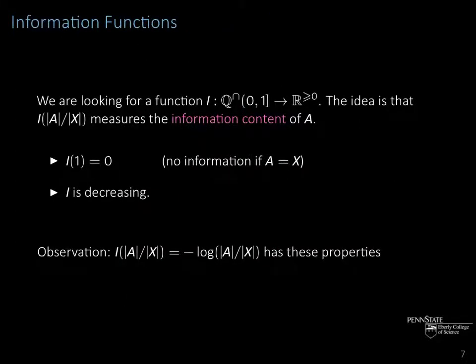To quantify this mathematically, we look for a function I defined on the positive rationals in [0,1] that measures the information content by a real number. The idea is that I(|A|/|X|) measures the information content of A. From what we've seen, this function I should have the following properties: I(1) = 0 (if A equals X, we have no information gain), and I should be decreasing in |A|/|X|, obtaining its lowest value when A = X.